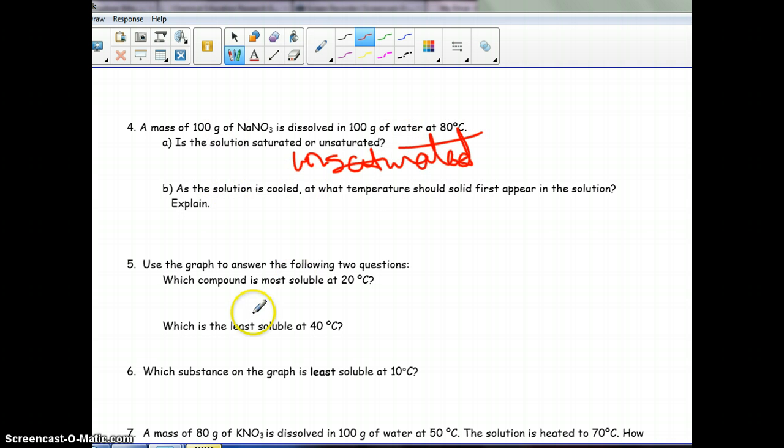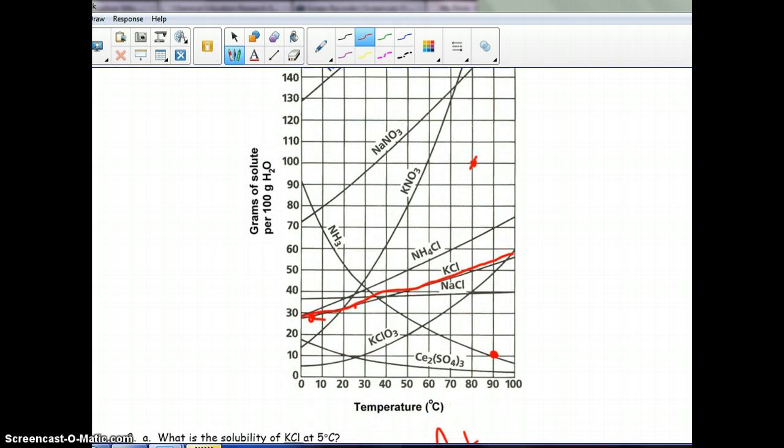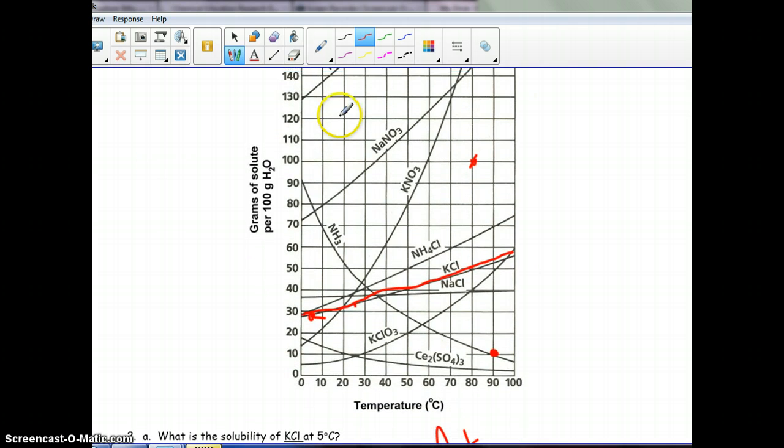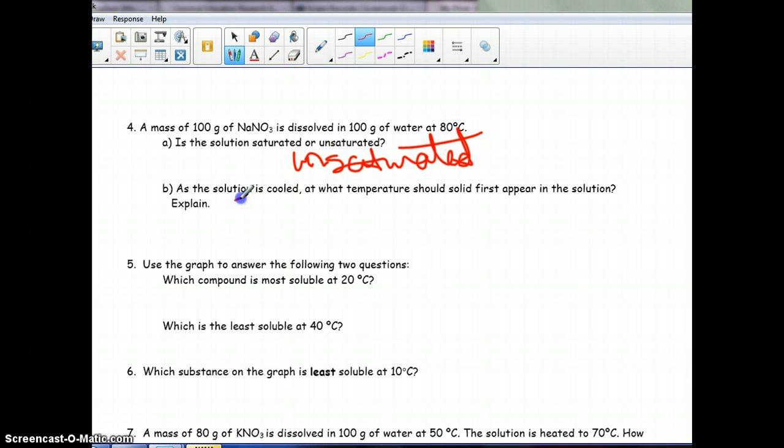As the solution is cooled, at what temperature should solid first appear in the solution? So, solid's going to start falling out when we get a temperature that is going to put us at an unsaturated range. So here is where we would be saturated. So, saturated would be about 35 degrees. So, anything below 35 degrees, we will have more solute than the maximum that can be dissolved. So, we should start seeing some of it fall out of solution. So, 35 degrees, and I'll let you guys do the explaining.